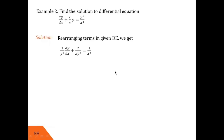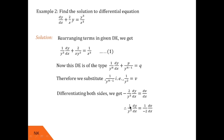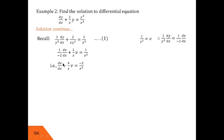We substitute v = 1/y². Differentiating gives −2/y³ · dy/dx = dv/dx, so 1/y³ · dy/dx = −(1/2)·dv/dx. Substituting into equation 1 gives −(1/2)·dv/dx + (2/x)·v = 1/x³. Multiplying throughout by −2 gives: dv/dx − (4/x)·v = −2/x³.